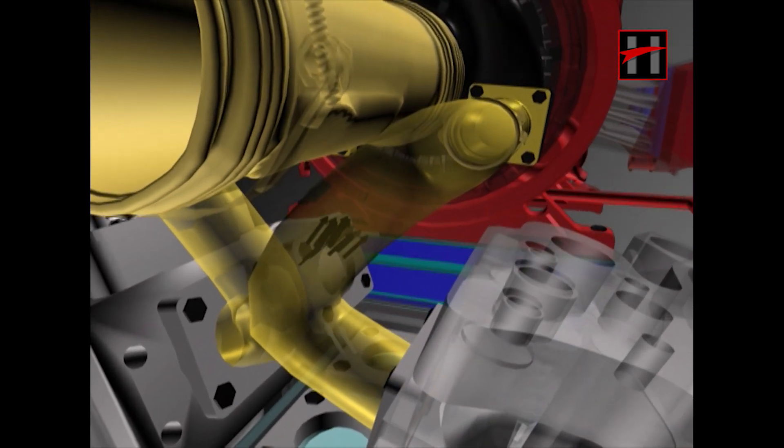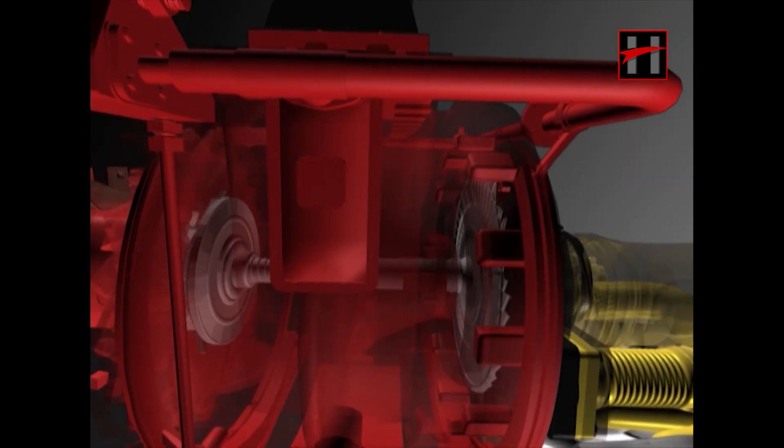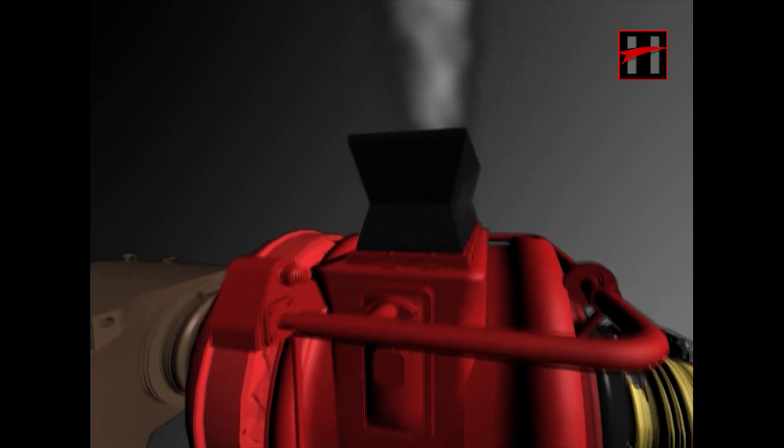The exhaust valves open and the inlet valves close. The exhaust gas comes out from the cylinder and goes into the exhaust manifold. From there, after making the turbine blades rotate, this exhaust gas goes out into the atmosphere.